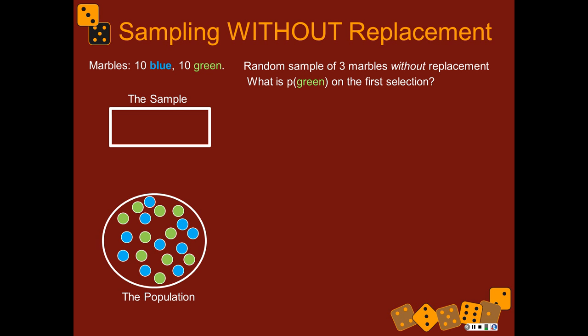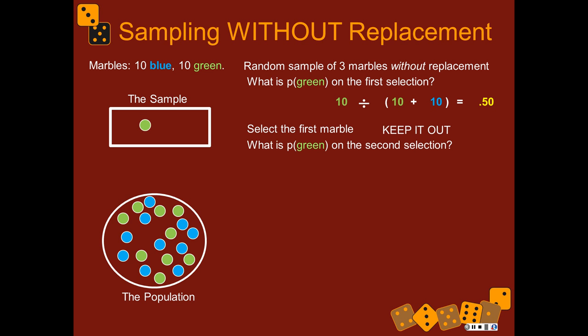What's the probability of picking a green marble on the first selection? The same as before: 10 things we're interested in out of 20 total, so it's 0.5. We select the first marble and keep it out — it was green. Now it actually matters what happened on the first selection to figure out what will happen for the second one. What's the probability of getting green? There are only nine marbles left that are green.